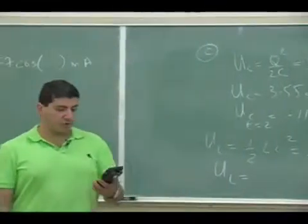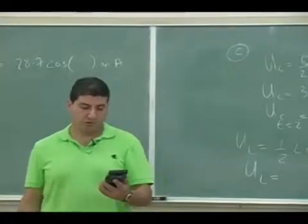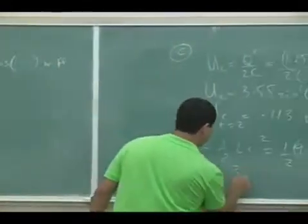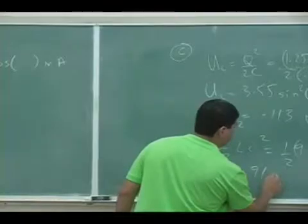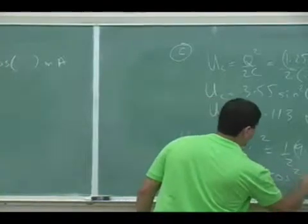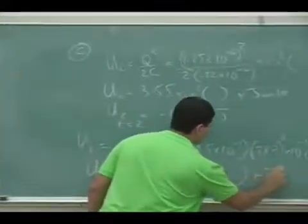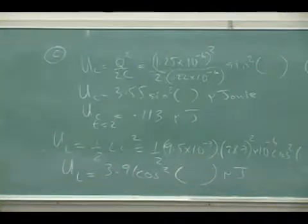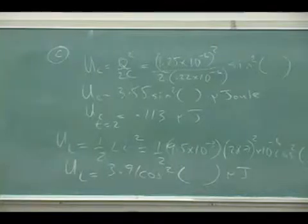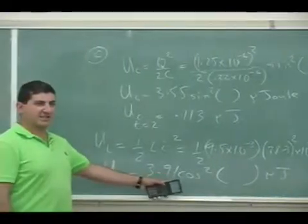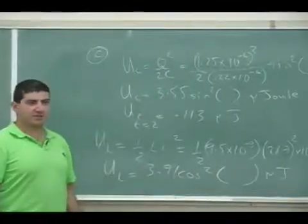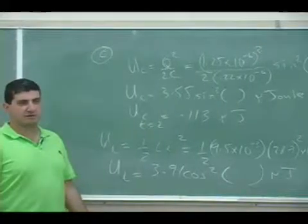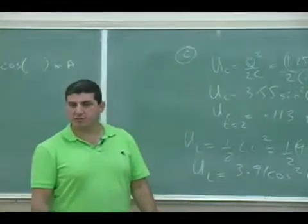I'm getting 3.91 micro cosine squared of that thing microjoules, but what should I get? The maximum energy stored in the inductor should be the same as the capacitor, so this is unacceptable. Well, it's because of the rounding, all the little roundings that I did.